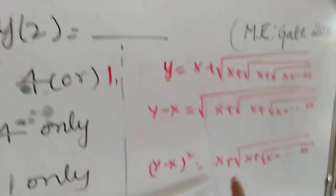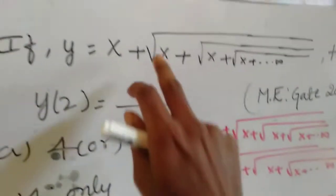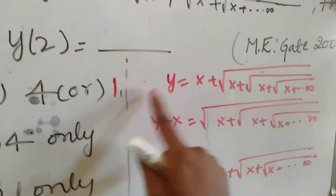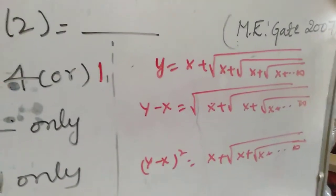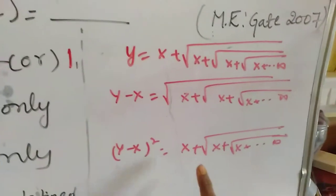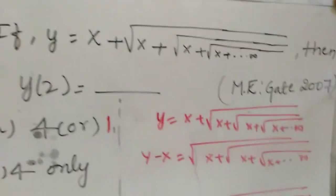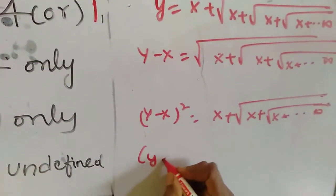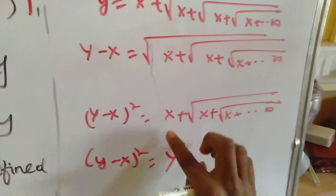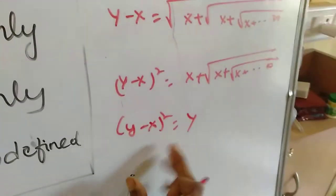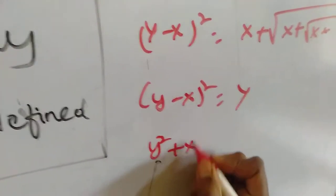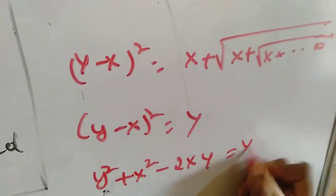We compare this result to the original equation. This right-hand side is the same as y, because it contains infinite terms in x and there is no change if we remove one x from the left side. Therefore the entire term becomes y, and so y minus x all squared equals y.